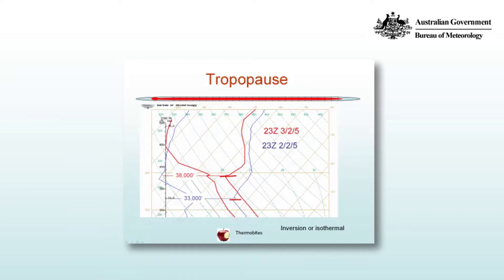The tropopause is defined as a region where the temperature stops decreasing with height — either constant, as it more or less is here, in which case we call it isothermal (ISO meaning same and thermal referring to temperature), or a weak inversion where the temperature actually increases with height. So the tropopause is essentially an inversion, which acts to limit vertical motion in the real atmosphere, and we'll look at that later when we consider deep convection.